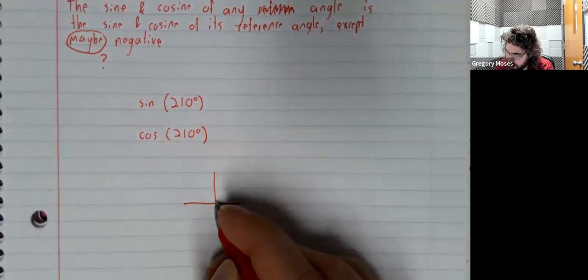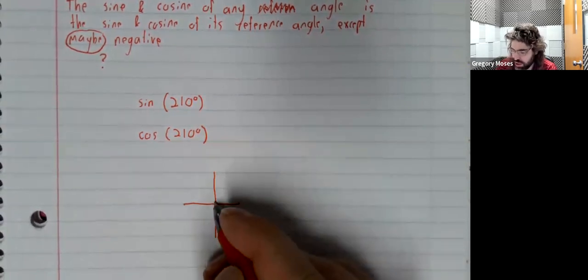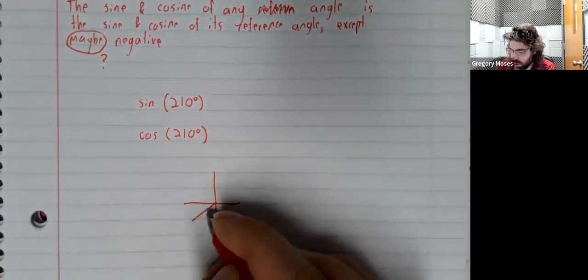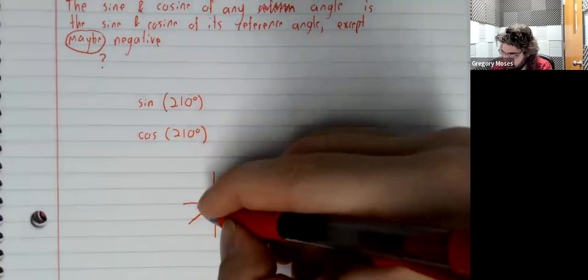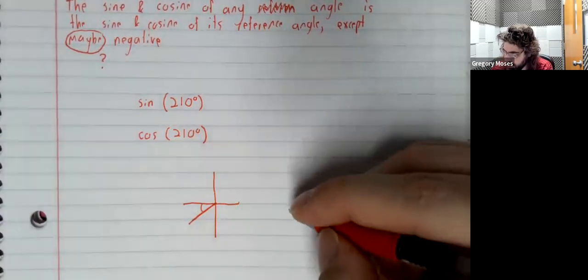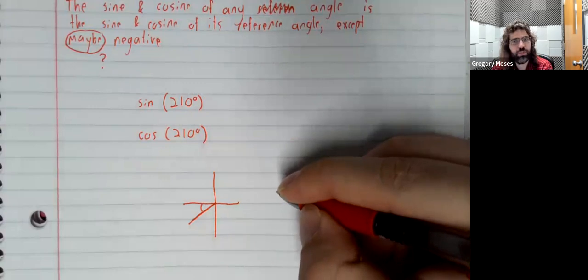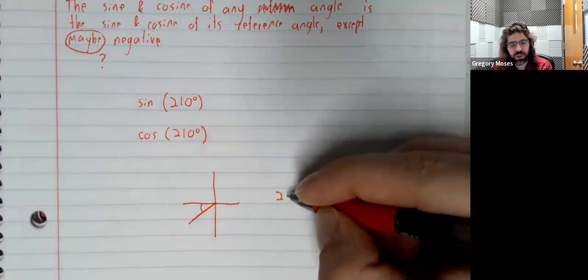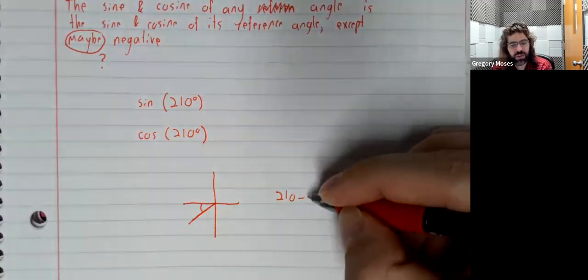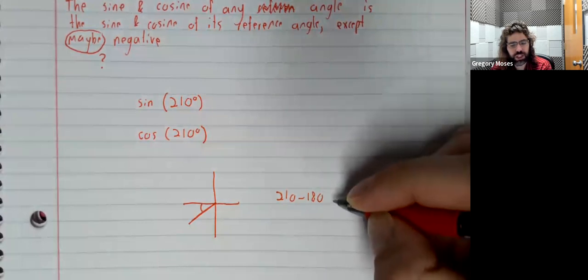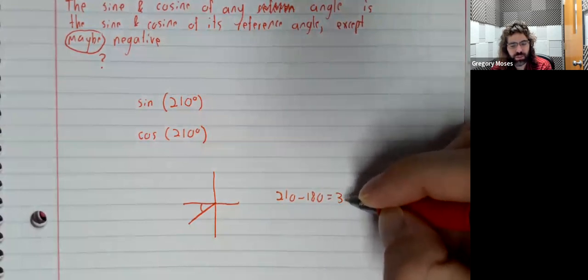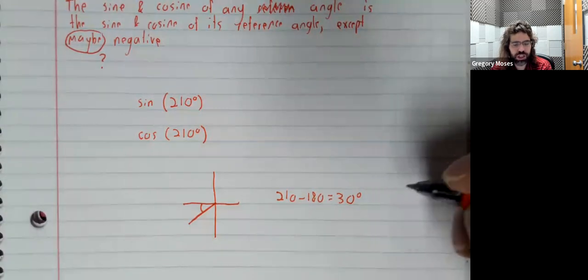210 degrees is in the third quadrant. And the reference angle then is 210 minus 180 or 30 degrees.